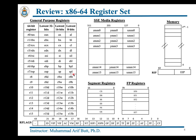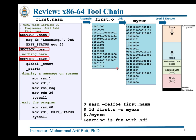To understand and write x86-64 assembly programs, one must know the naming convention that Intel uses for the 16 general-purpose registers, the meanings of different flags inside the RFLAGS register, the usage of the six segment registers, eight floating-point registers, and 16 SSE media registers. If you have an issue with this, please go through the previous session where I have discussed them in detail. Similarly, the x86-64 toolchain has been discussed in many previous sessions.